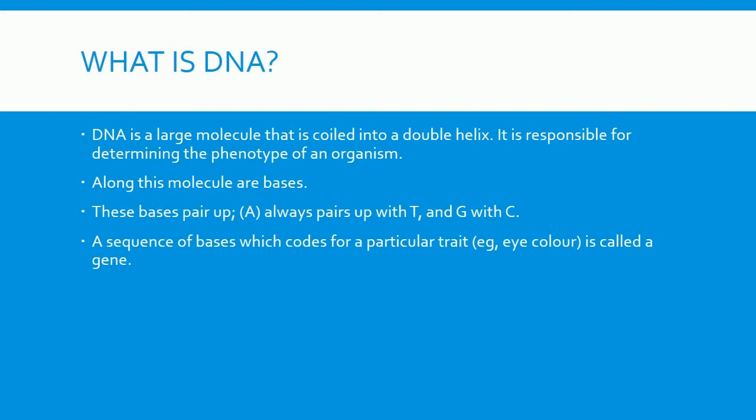A sequence of bases which codes for a particular trait — for example, eye color — is called a gene.